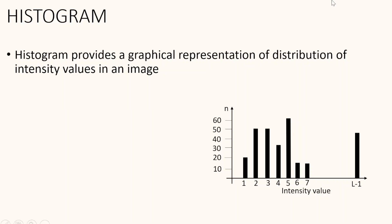Here you can see a figure showing a histogram. A histogram is a bar graph that displays the number of pixels in an image for each intensity value. On the x-axis you can see the intensity value, and the y-axis shows the number of pixels at that particular intensity. For a grayscale image, intensity values range from 0 to 255, and for a color image there are histograms for each of the red, green, and blue channels. To create a histogram, we first divide the range of intensity values into a set of bins, count the number of pixels that fall into each bin, and represent that count by the height of the bar for that bin.